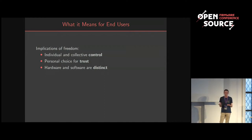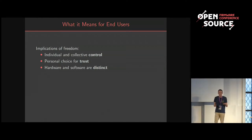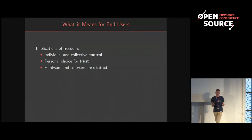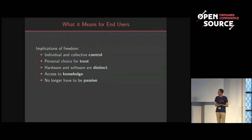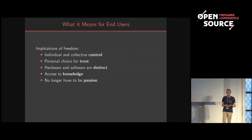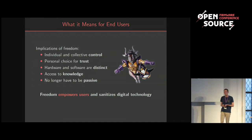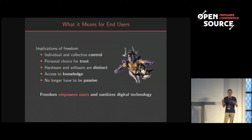To make that effective, the distinction between hardware and software is key. There's no good reason why one piece of software should be tied to one piece of hardware. It should always be possible to replace either aspect — if hardware is supposed to run any software, that should be true in practice. That means we need access to knowledge; when users have it, they no longer have to be passive. Freedom empowers users and allows sanitizing digital technology on a society-wide scale.